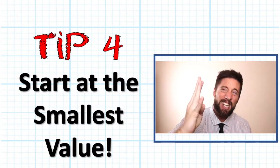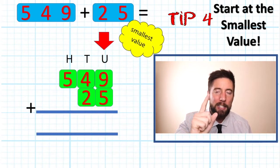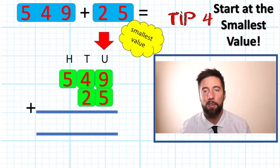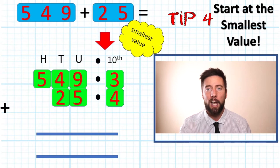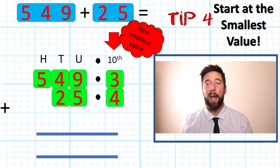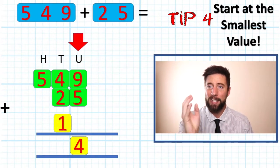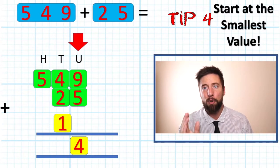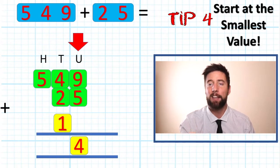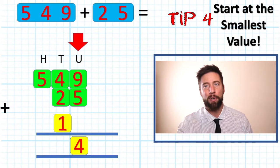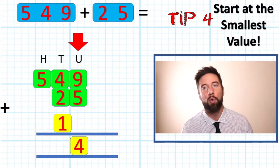Tip number four, it's not really a tip, this is an essential. We always start from our smallest value, not necessarily always our units. If we have got decimals, we will have smaller values down on the place value chart. So we always learn to start from our smallest value. That way, like in this question, if I have nine add five, giving me 14, which is a 10 and a four, I can still move my 10 into my tens column because I haven't done that question yet. If I worked the other way and have done my tens, I'd get myself pretty confused when I end up with a 14 there at the end. Okay, so tip number four, always start in our smallest value.